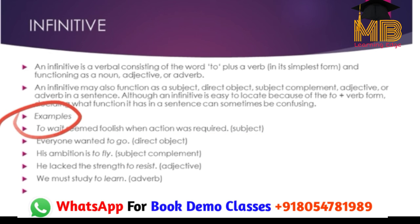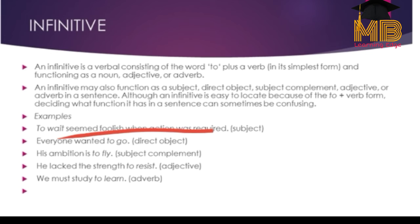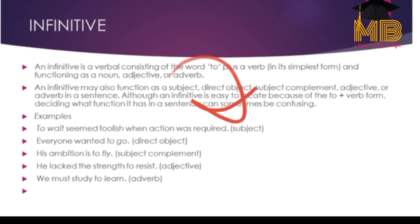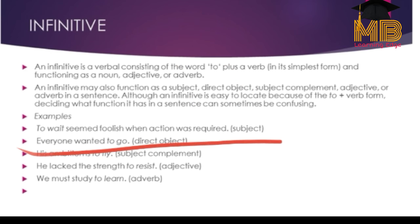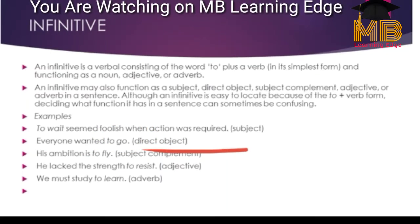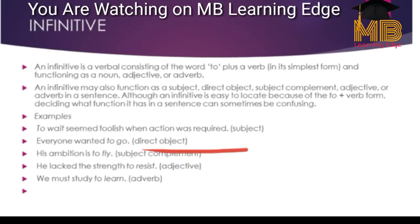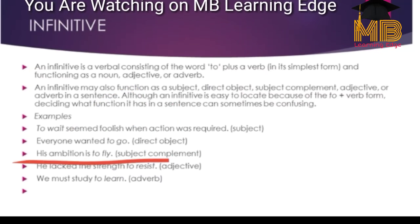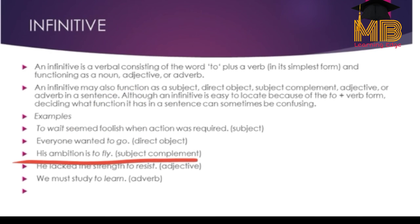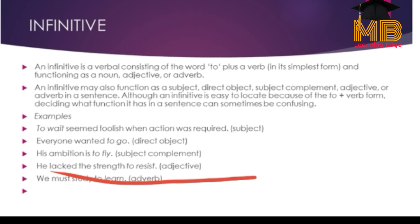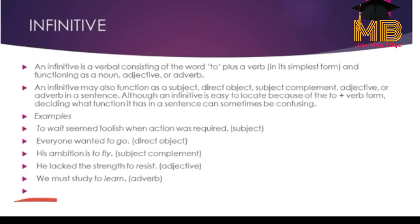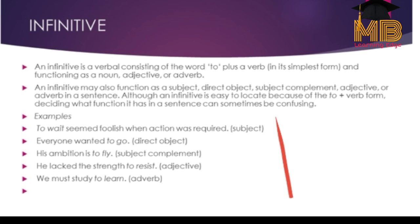For example: 'To wait seems foolish when action was required' — here 'to wait' is used as a subject. 'Everyone wanted to go' — here 'to go' is a direct object. 'His ambition was to fly' — subject complement. 'He lacked the strength to resist' — here it is being used as an adjective. 'We must study to learn' — here it is being used as an adverb.